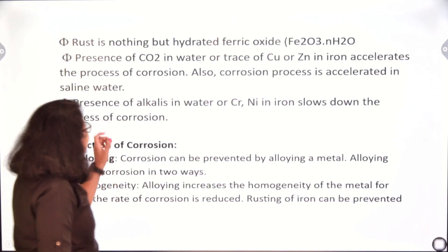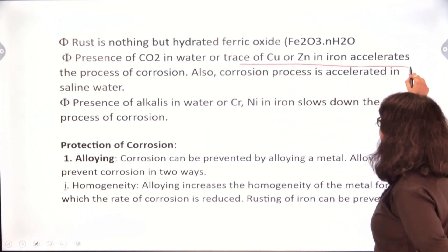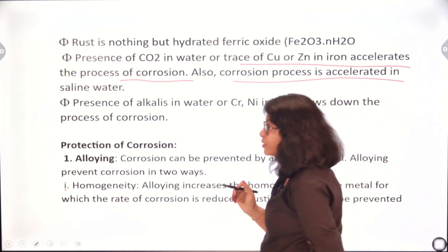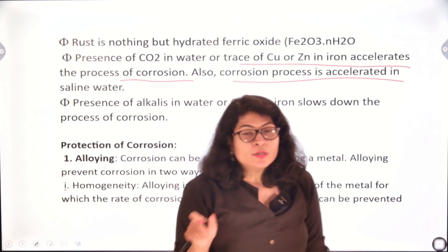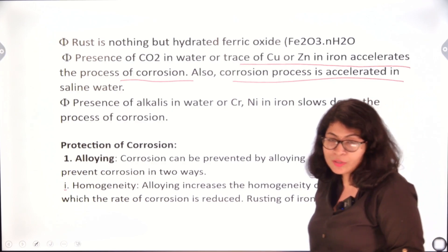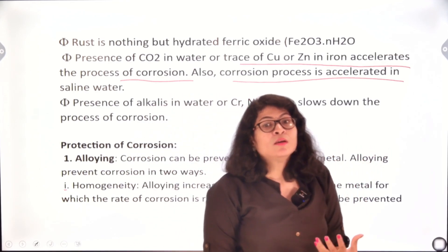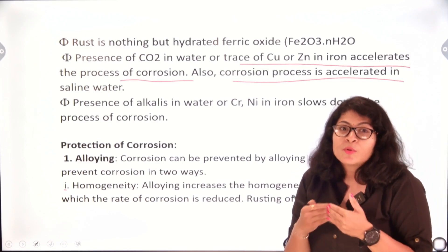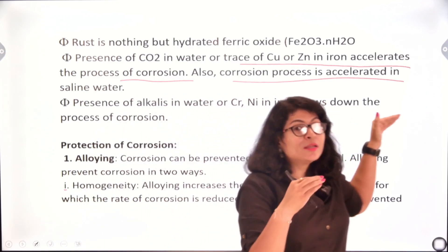Rust is nothing but hydrated ferric oxide. The presence of carbon dioxide in water and traces of copper or zinc in iron accelerates the process of corrosion. Corrosion is also accelerated in saline water. This is because the iron surface acts as an electrolytic cell, and any impurities can fasten the process of ion conduction. The presence of alkalis in water, or chromium and nickel in iron, slows down corrosion because they are comparatively inert metals and do not lose electrons as readily as iron.